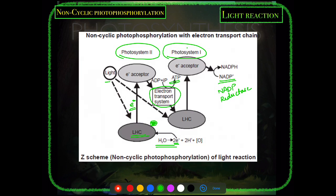At PS1, an enzyme called NADP reductase (or FNR — Flavoprotein NADP Reductase) facilitates the conversion of NADP+ to NADPH. PS2 is the first photosystem activated, sending its electron through the ETS toward PS1, then to NADP+ to form NADPH. The electron replenishing PS2 comes from photolysis of water, and the characteristic zigzag shape of this pathway is why non-cyclic photophosphorylation is also called the Z scheme.